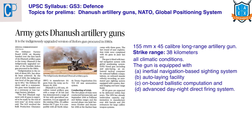The next article is 'Army Gets Dhanush Artillery Guns,' which comes under GS Paper 3 under the topic of defense. The first batch of six indigenously developed Dhanush artillery guns were handed over to the army. From the prelims point of view, we should know about these Dhanush artillery guns, NATO, and the Global Positioning System.